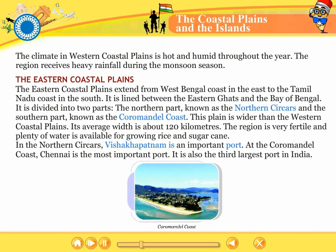The eastern coastal plains extend from West Bengal coast in the east to the Tamil Nadu coast in the south. It is lined between the Eastern Ghats and the Bay of Bengal. It is divided into two parts: the northern part known as the Northern Sirkars and the southern part known as the Coromandel coast. This plain is wider than the western coastal plains. Its average width is about 120 kilometers. The region is very fertile and plenty of water is available for growing rice and sugarcane. In the Northern Sirkars, Visakhapatnam is an important port.